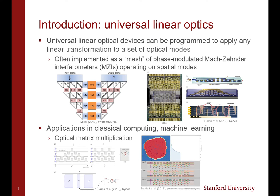For some background, Universal Linear Optical Components are devices which can be dynamically programmed to apply any linear transformation to a set of optical modes. Such devices are often implemented as a mesh of phase-modulated Mach-Zehnder interferometers, or MZIs, which operate on a set of spatial modes.